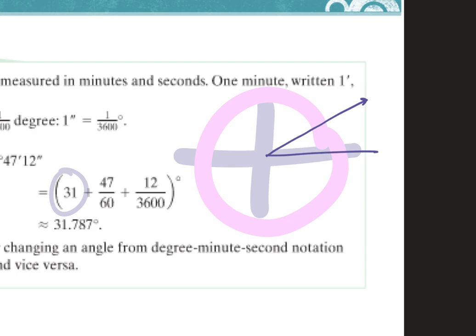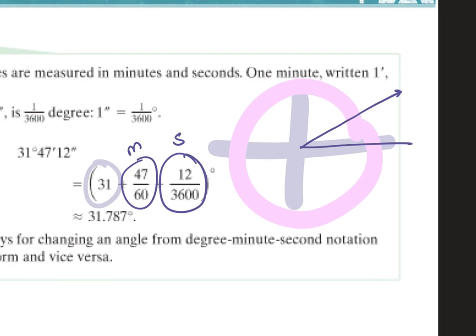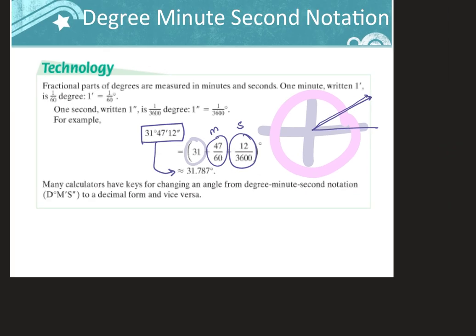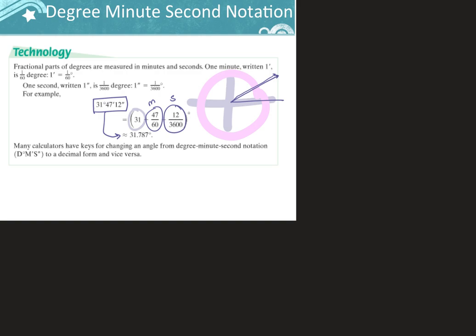The degree lines up with the degree on a clock. So 31 degrees would be a little less than halfway. Then 47 over 60 represents the minutes, and 12 over 3600 represents the seconds — it means you're getting a tiny bit more than 31 degrees. You don't ever have to graph it in degree-minute-second notation, but you do need to convert between DMS and decimal degree.